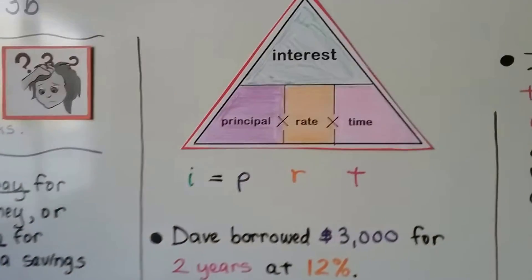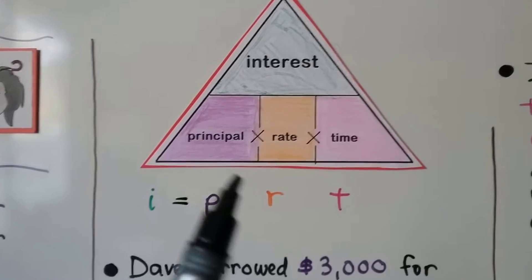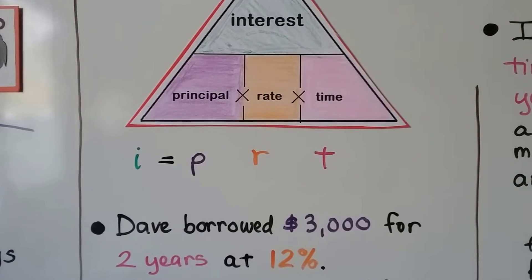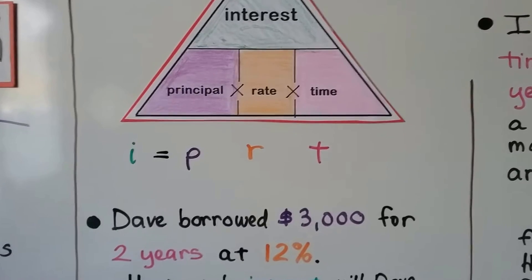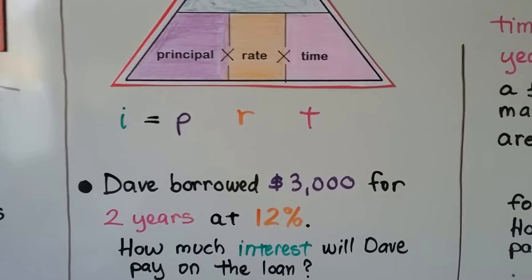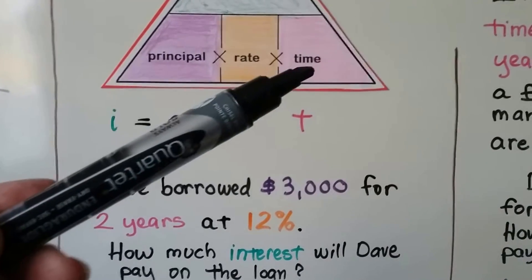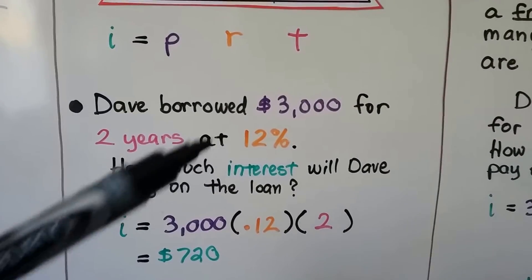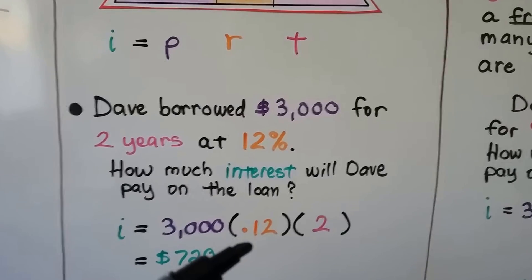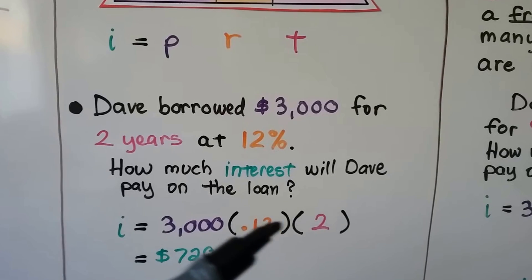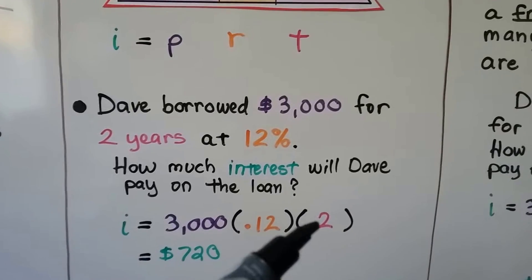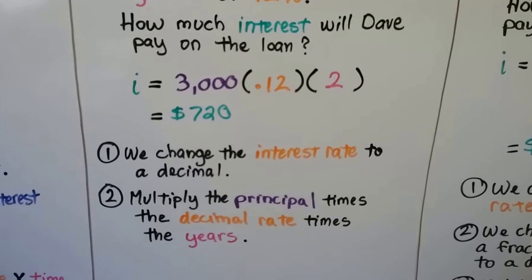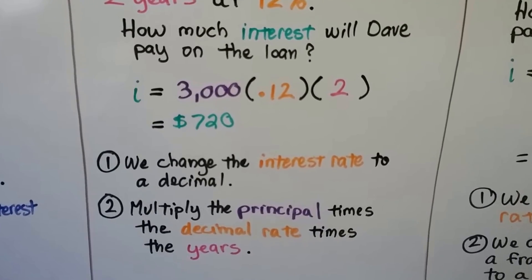We've expanded our triangle and now we've got interest on top and principal, rate, and time at the bottom. So if Dave borrowed $3,000 for two years at 12%, how much interest will he pay? The principal is $3,000, the time is two years, and the rate is 12%. We change 12% into a decimal and multiply them together: 3,000 times 0.12 times 2, which comes out to $720.